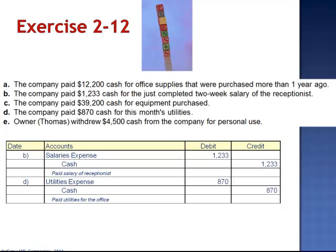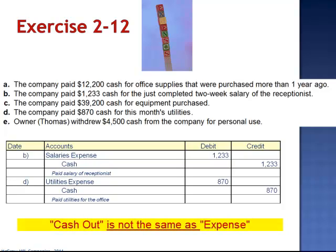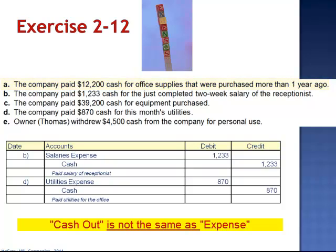What's important about Exercise 12 is to realize that although all five transactions result in outflows of cash, they don't all necessarily meet our definition of an expense. You can part with cash and exchange it for another asset, as we did in C, and your net worth stays the same. Sometimes we part with cash and pay off liabilities, as we did in Letter A. So just because we pay cash doesn't mean it's an expense.